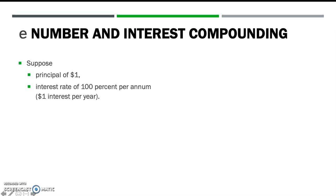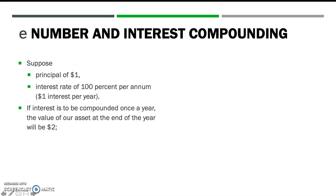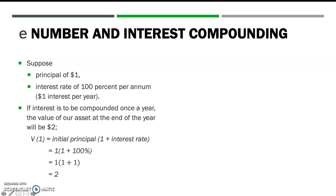Suppose we start with a principal of $1. We found a hypothetical banker to offer us the unusual interest rate of 100% per annum. If interest is to be compounded once a year, the value of our asset at the end of the year will be $2. We shall denote this value by V1, where the number in parentheses indicates the frequency of compounding within one year. V1 equals the initial principal times 1 plus the interest rate, which equals 2.